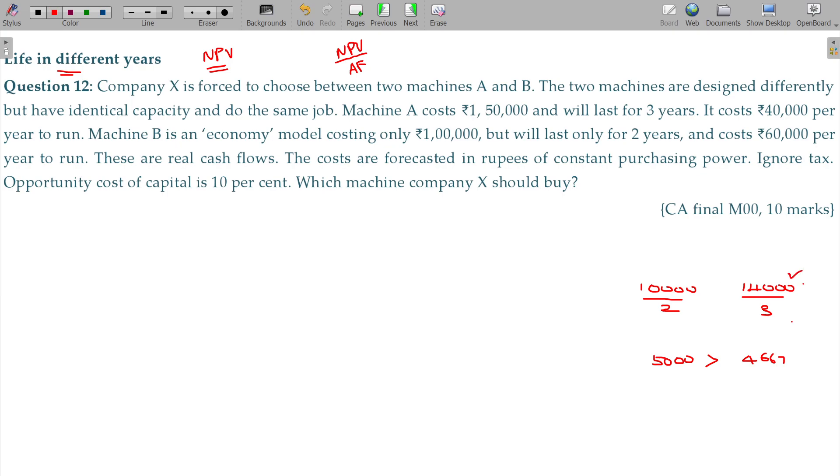But this is for 3 years, this is for 2 years. So yearly, whichever is better. Time value of money, consider it. Both divided by number, annuity factor. That is nothing but summation of the present value factor for all the years.